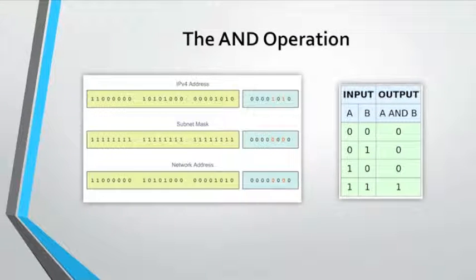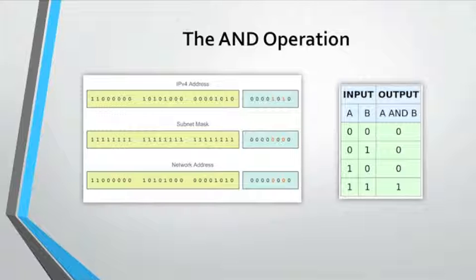The AND operation: AND is one of three basic binary operations used in digital logic; the other two are OR and NOT. While all three are used in data networks, AND is specifically used in determining the network address.